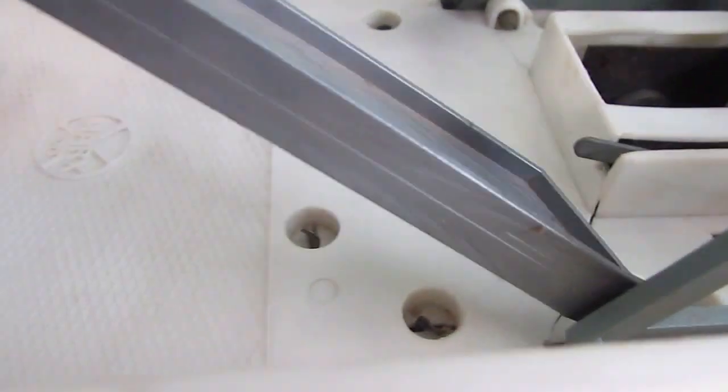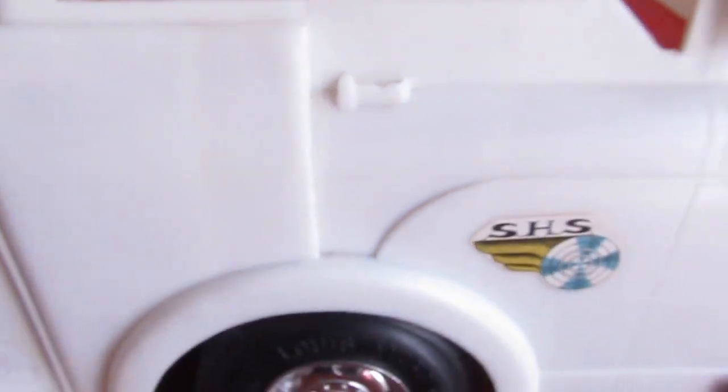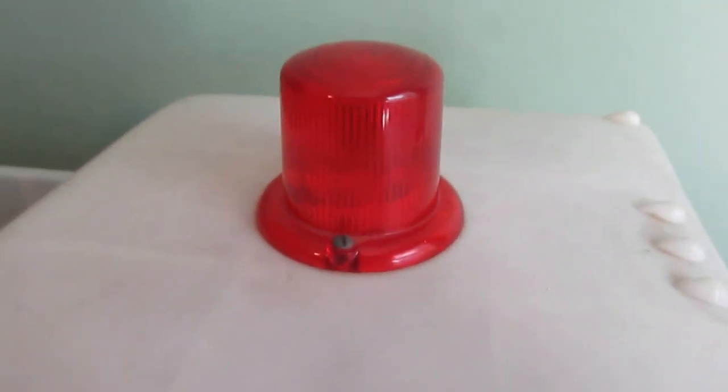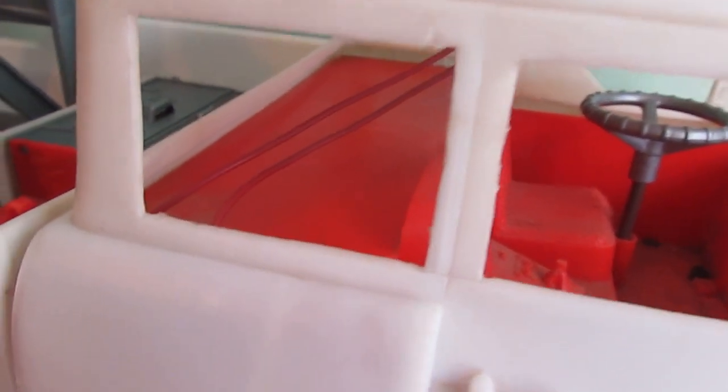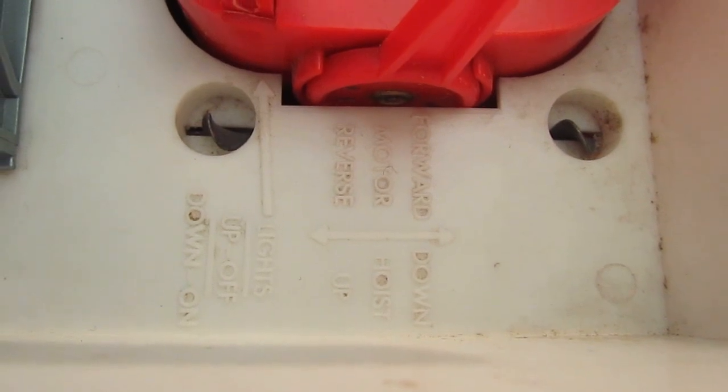So it does take batteries, four of them. I call them the big boy batteries, I believe they're D's. The biggest batteries you can buy for toys, that's what this thing takes. There's some of the wiring for the light here. We'll have to see if that works as well. There's some more controls and instructions on how to operate it.